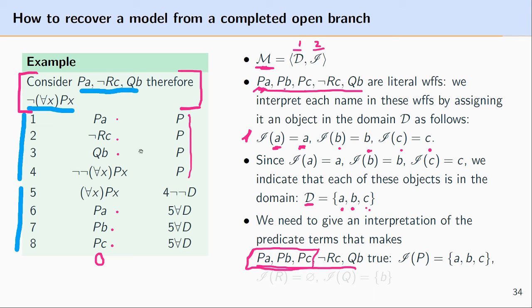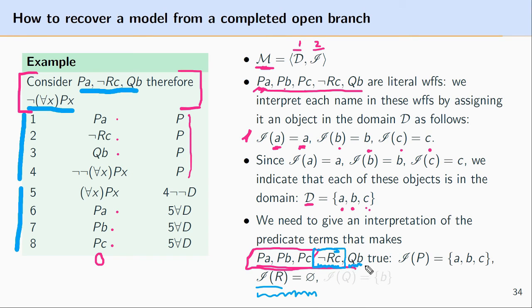Next, I want to make sure that not RC is true, so I need to construct an interpretation of R that ensures not RC is the case — that would be any interpretation that does not contain C. It could be R interpreted in terms of A and B, just A, just B, or an interpretation where R refers to no objects in the domain at all. What's important is that the interpretation of R does not contain C. Lastly, we have QB, and we need an interpretation of Q that contains B. We could have Q refer to A, B, and C — so long as it contains B, then QB will come out as true.